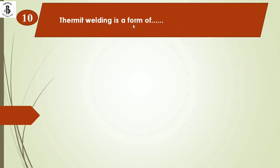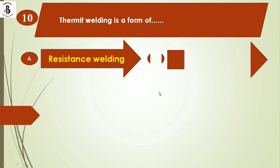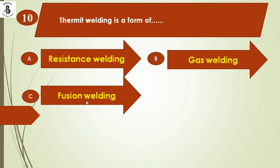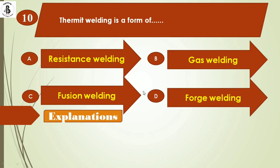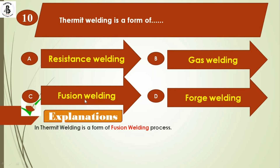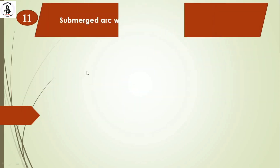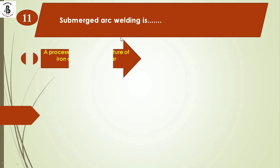Next question: thermite welding is a form of — option A: resistance welding, option B: gas welding, option C: fusion welding, option D: force welding. Thermite welding is a fusion welding process, similar in arrangement to casting. A thermite mixture in molten form is filled into a cavity, fuses, and solidifies. So the right answer is option C, fusion welding.